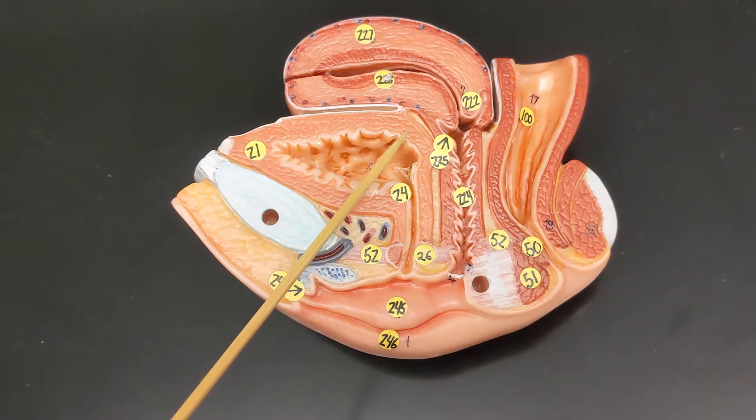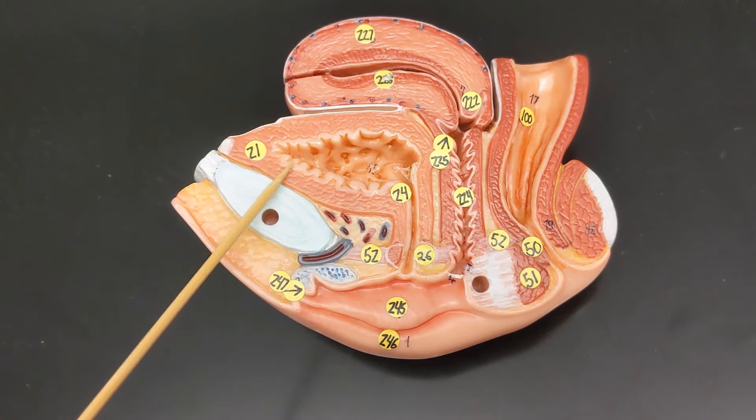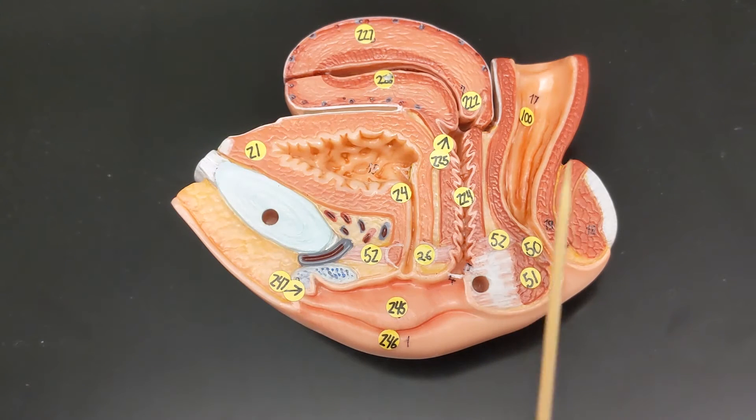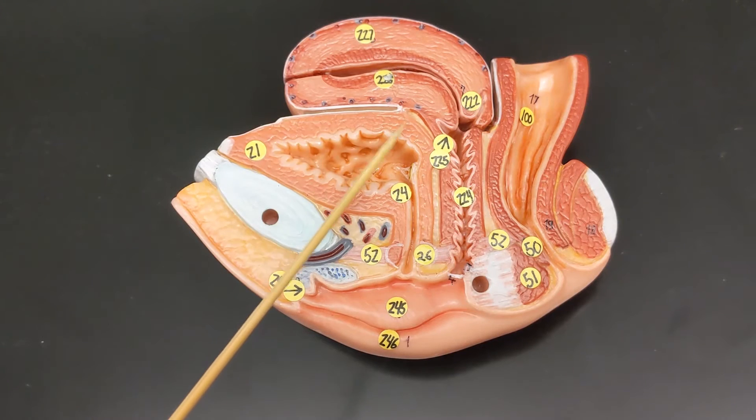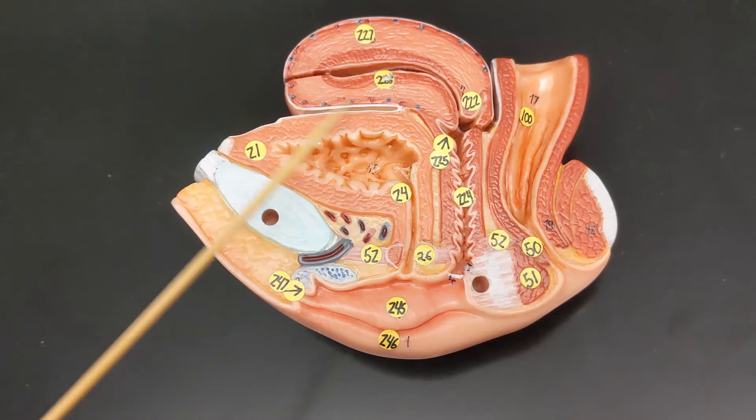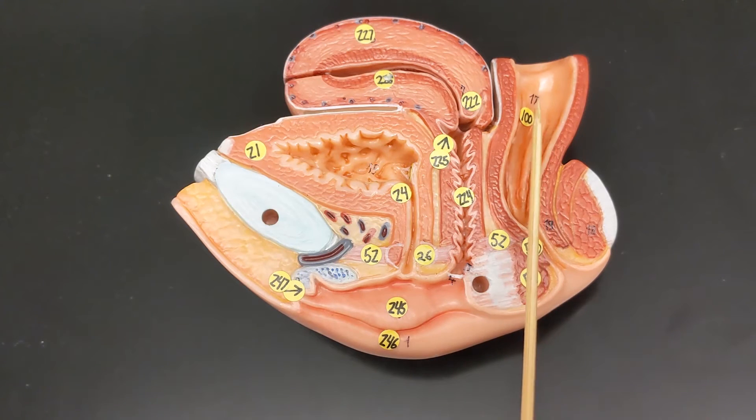So first I would like you to tell me what is this organ, this, and that. So this was the bladder which is sitting underneath of the uterus and this is the rectum.